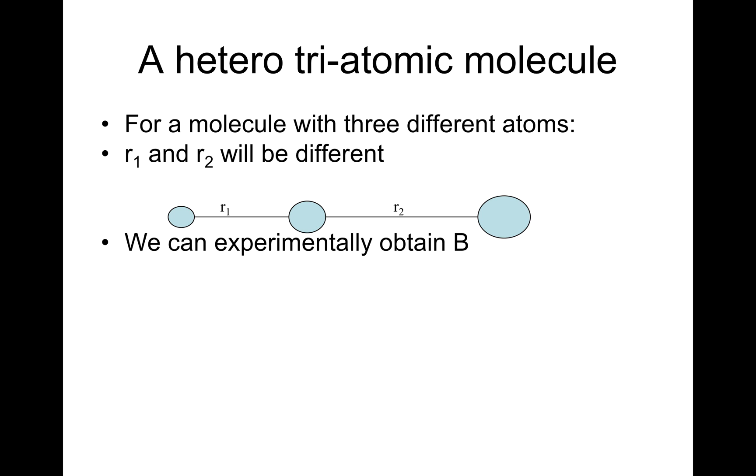We can experimentally obtain B. Proceed to find R1 and R2 by the method of isotopic substitution.